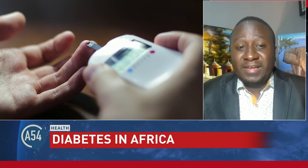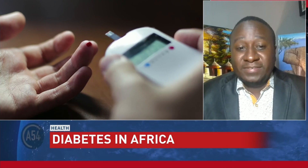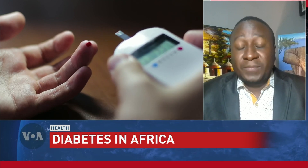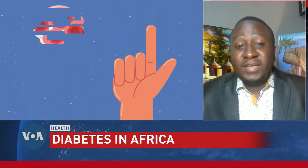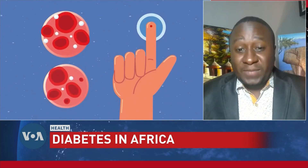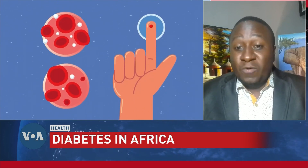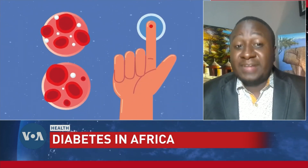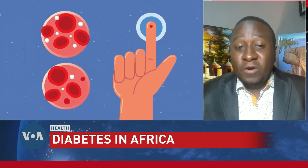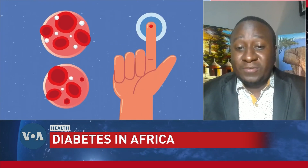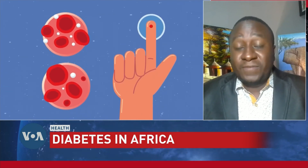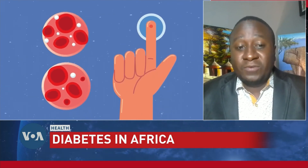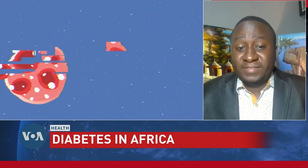We also have another type of diabetes which is called gestational diabetes, which is a temporary condition that occurs in pregnancy and carries a long-term risk for type 2 diabetes. Women with gestational diabetes are at increased risk of some complications during pregnancy, delivery, and for their infants.